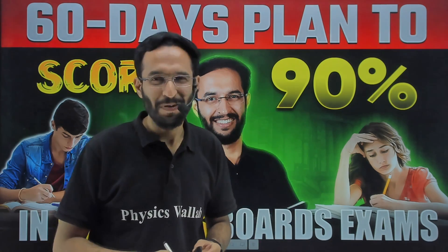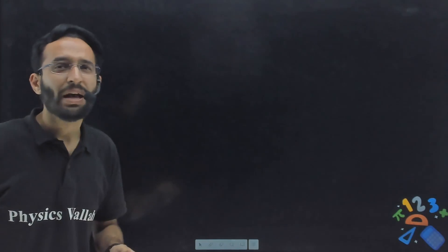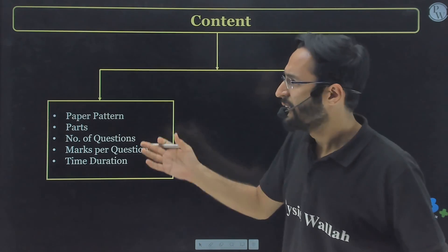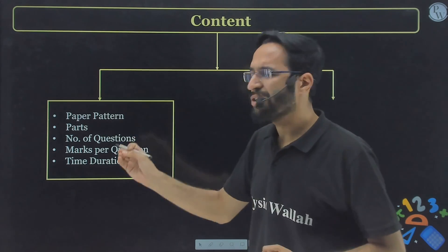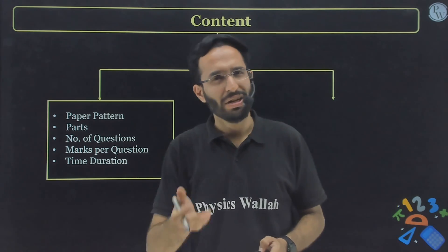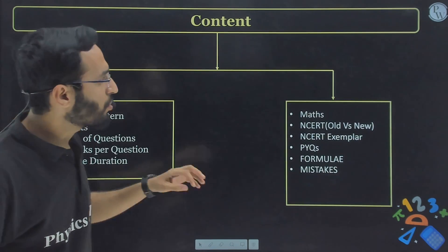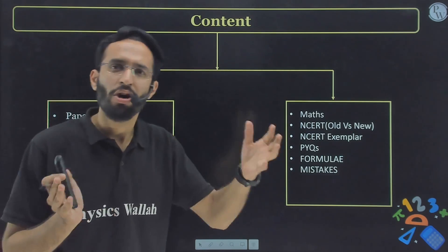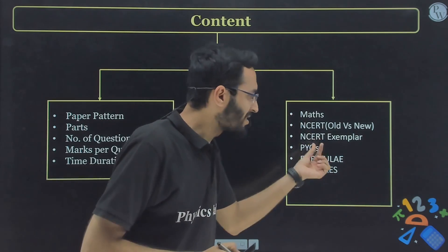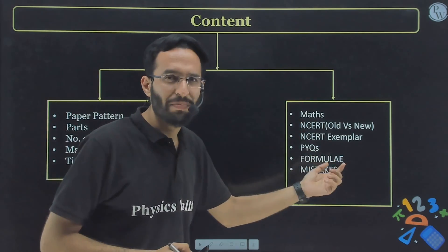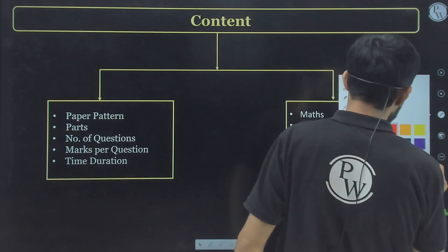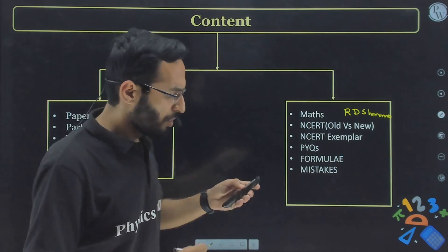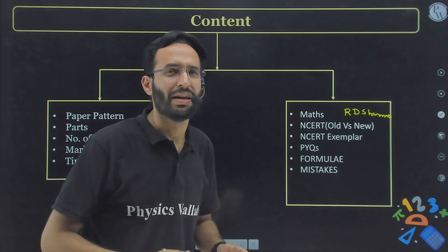I have divided this strategy into two parts. The first part is based on your paper pattern — how many sections it contains, how many questions per section, total marks, and time duration. In the second part, I will discuss your preparation strategy for Maths — how you have studied till now, covering your past, present, and future for NCERT (old or new), NCERT Exemplar, RD Sharma, and other books, as well as PYQs, formulae, mistakes, and sample papers.